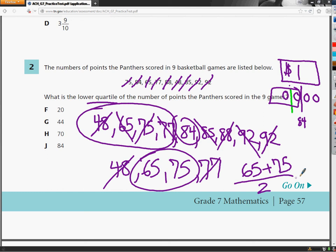So I'm going to do 65 plus 75 and divide by how many there are, which is 2. So basically I'm taking the mean or the average of the two numbers. And I find out that that answer is 70.